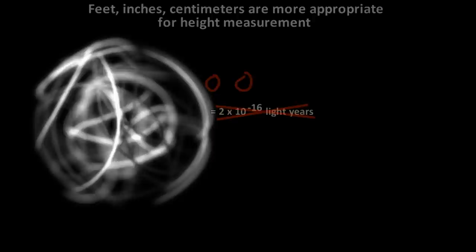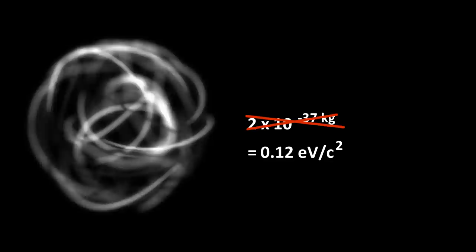The kilogram measurement for the neutrino is arbitrary. A better measurement would be electron volts, or even picograms.